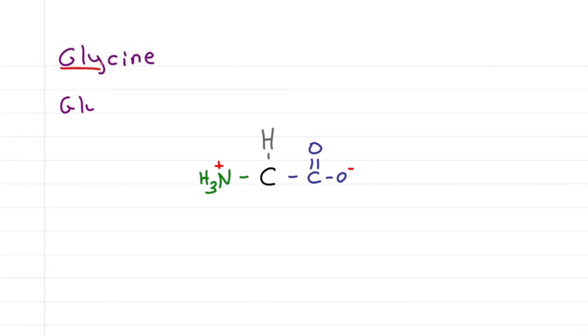Glycine, that's G-L-Y, first letter G, does not have an R group, just a hydrogen for a total of two, which makes it achiral. Since there's no side chain, we can't say that it's hydrophobic or hydrophilic, it just isn't.